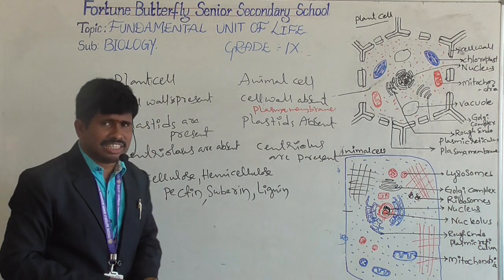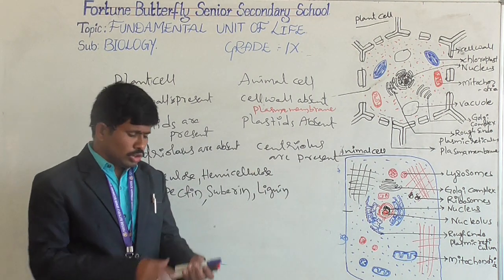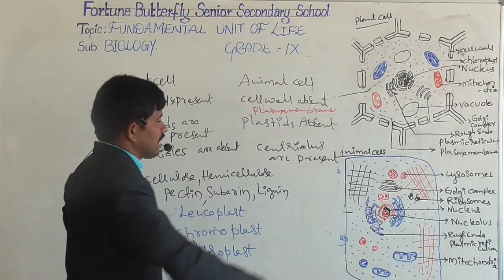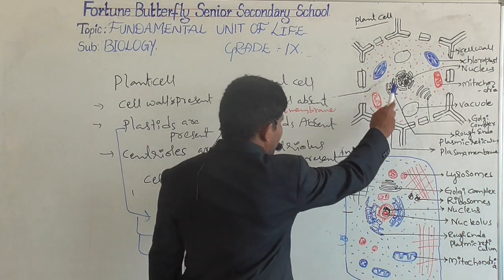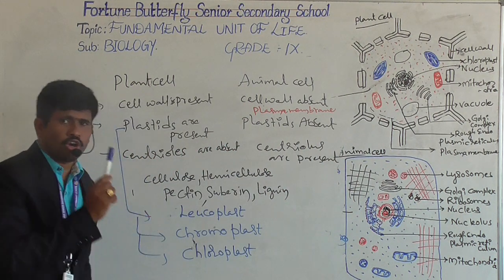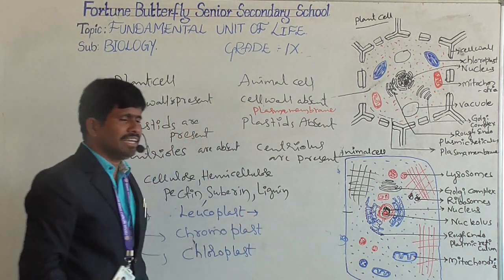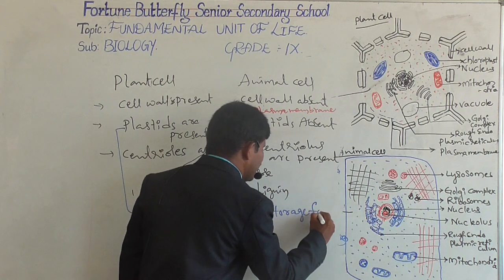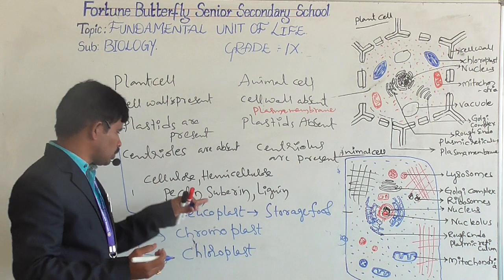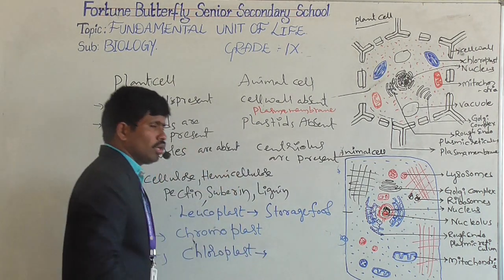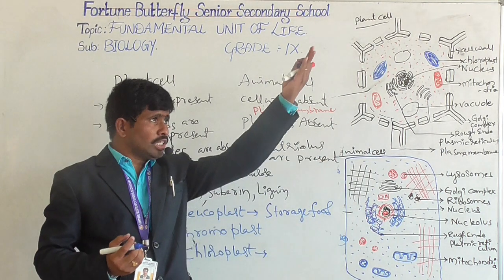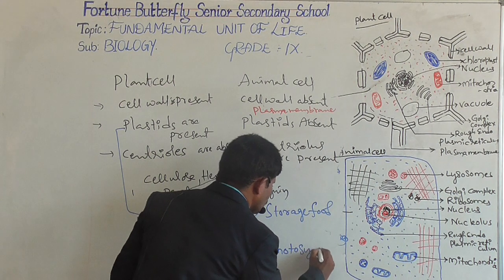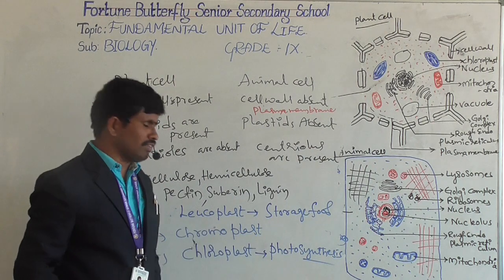Another difference between plant cells and animal cells is plastids. Plastids are present in plant cells and absent in animal cells. There are three kinds of plastids: leucoplasts, chromoplasts, and chloroplasts. Leucoplasts are present below the soil, especially for the storage of food — like in rhizomes and potatoes, which are white in color. Chloroplasts play a vital role in trapping solar energy and converting it to chemical energy, and are involved in the photosynthesis process.